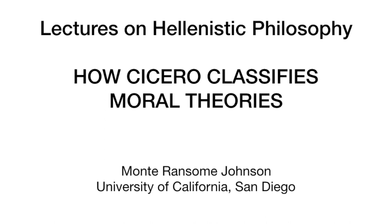So the combined theories are basically just the non-moral theories plus virtue? Essentially yes — they exactly recapitulate the highest goods of the non-moral theories but then add that morality is also part of this. So what a position like Zeno's has to do is somehow eliminate these non-moral goods and show that they are not relevant to the highest good. That would do away with all of the non-moral theories and then also the combined theories, leaving you with the idea that the highest good is morality only.